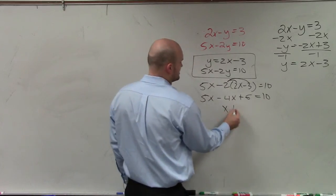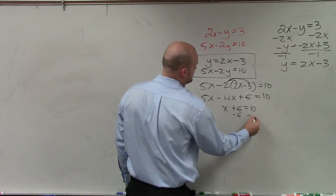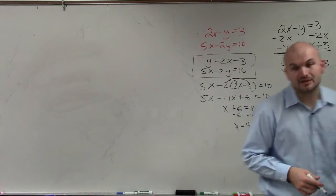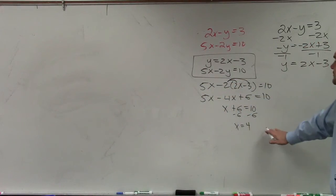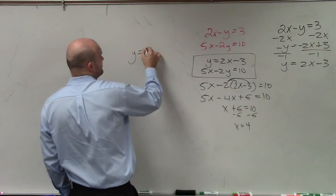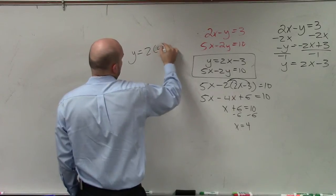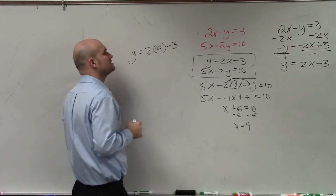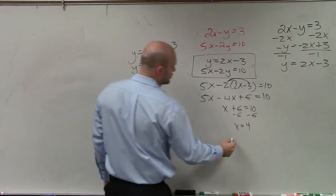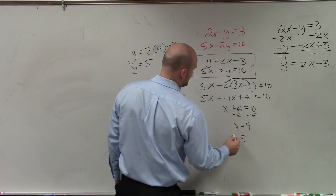Combine like terms: x plus 6 equals 10. Subtract 6 from both sides: x equals 4. Now that I know x equals 4, to find the value of y, I plug it in: 2 times 4 is 8, minus 3 is 5. So your coordinate point where the two lines intersect is (4, 5).